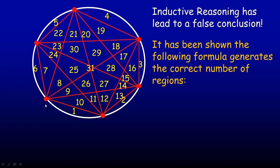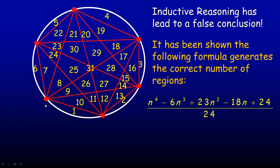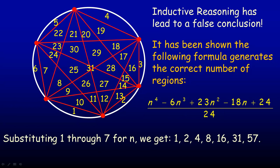It has been shown that a more complicated polynomial formula generates the correct number of regions — much more so than two to the power of n minus one. Substituting the numbers one through seven gives one, two, four, eight, 16, then 31, and the next one is actually 57. Inductive reasoning is great — that's essentially the scientific method, how scientists discover things by looking at examples and doing experiments. But it's not a proof, and sometimes inductive reasoning, even when it seems to indicate something is true, doesn't always have to be.